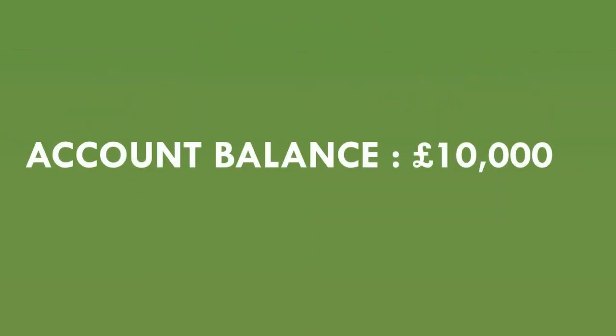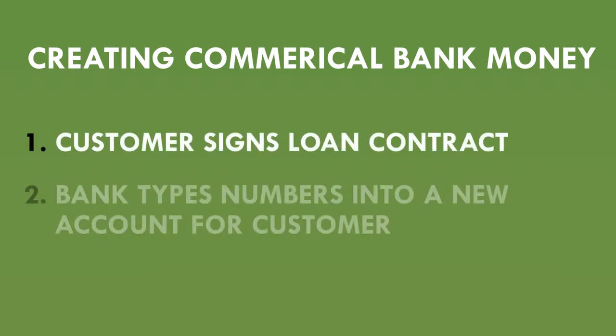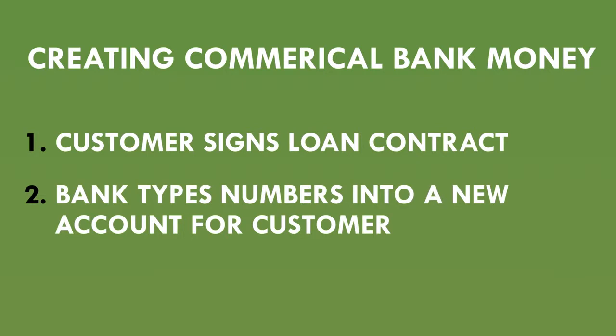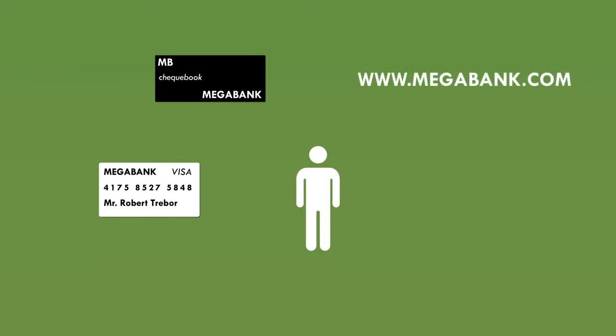When Robert goes to the cash machine to check his balance, he'll see £10,000 which he didn't have before. All the bank has done to create this new money is type some numbers into an account. It hasn't reduced the balance of anyone else's account, and it hasn't taken money from some pensioner and moved it into Robert's account. So the process of creating commercial bank money is as simple as: one, a customer signing a loan contract, and two, the bank typing numbers into a new account set up for that customer. This new bank-created money represents new spending power in the economy. Robert can now go and spend his money anywhere using his debit card, chequebook, internet banking transfers, or even by taking cash out of an ATM.